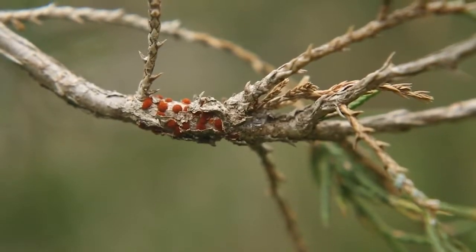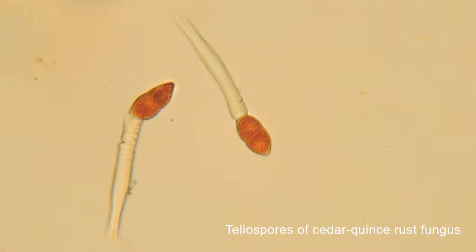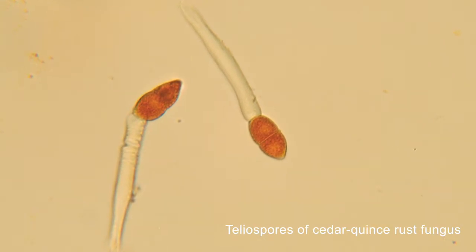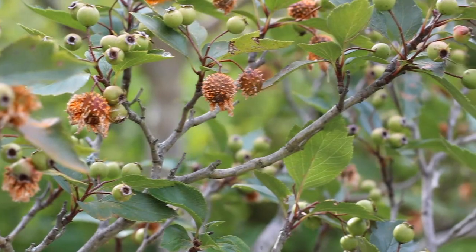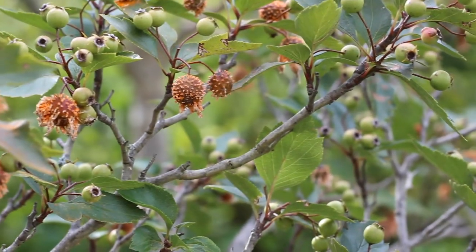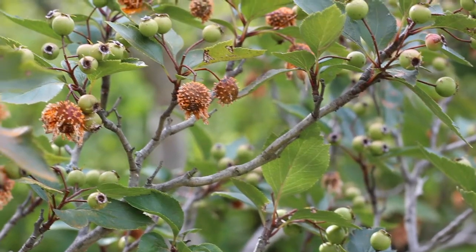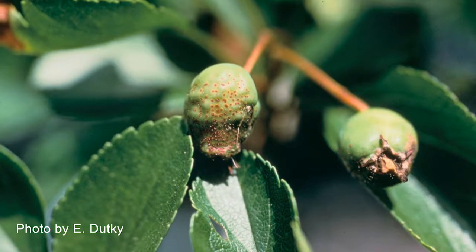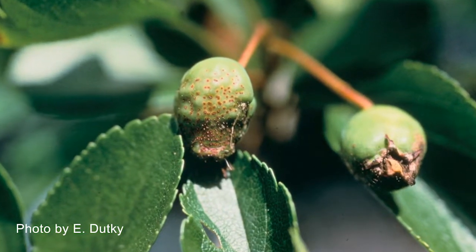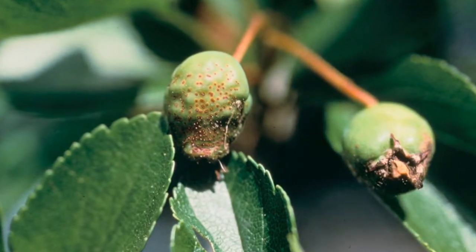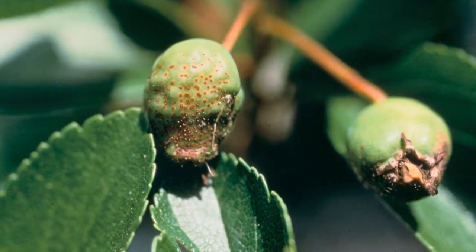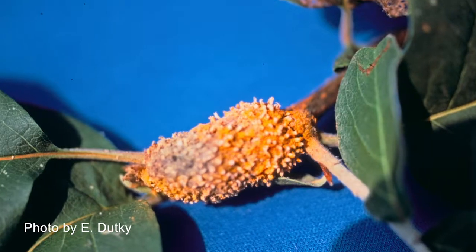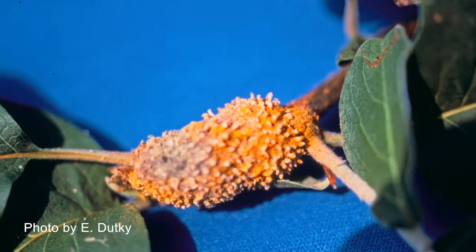Last March we looked at cankers on the red cedar, and the fungus produced spores on those cankers that were eventually blown over to this hawthorn tree and to some other rosaceous hosts. The spores were blown over just as the young fruit were beginning to develop on this plant, and the spores landed, germinated, and infected the fruit.